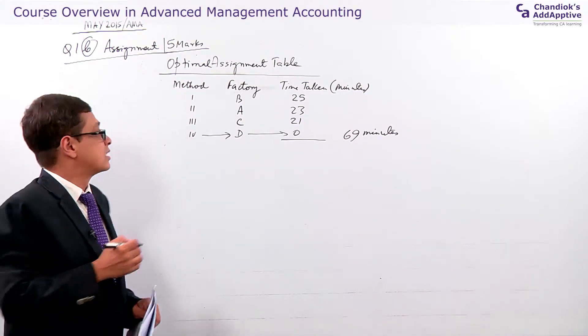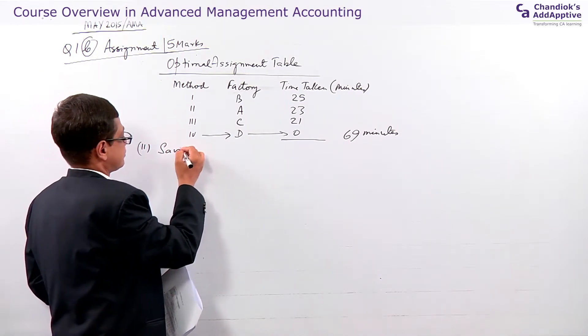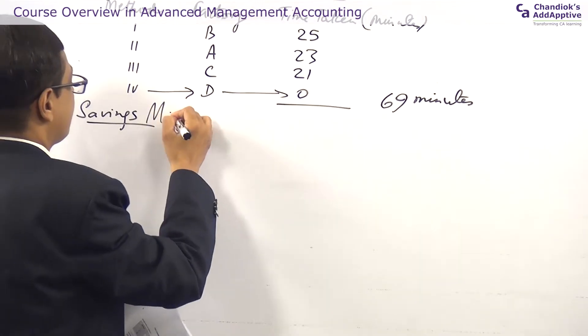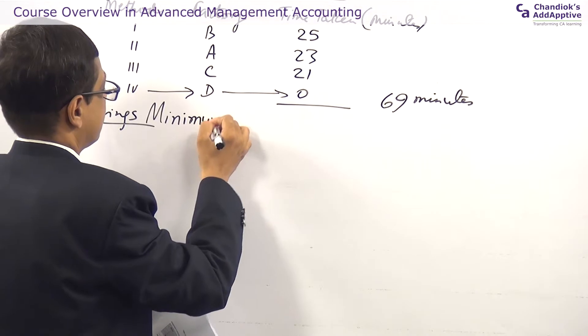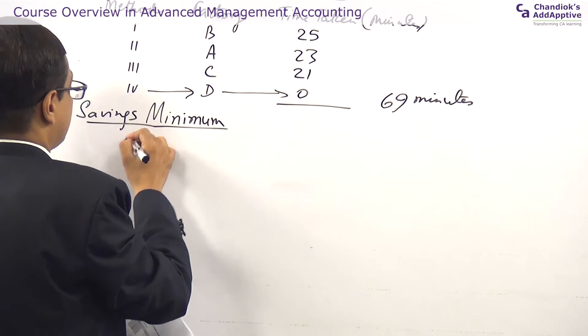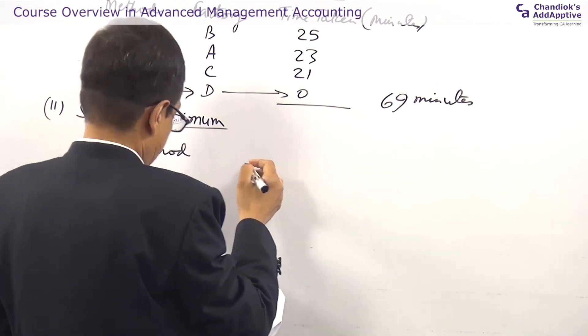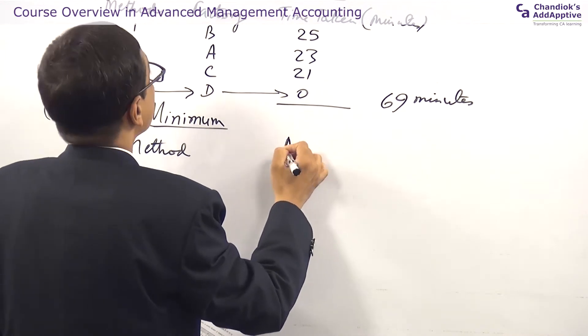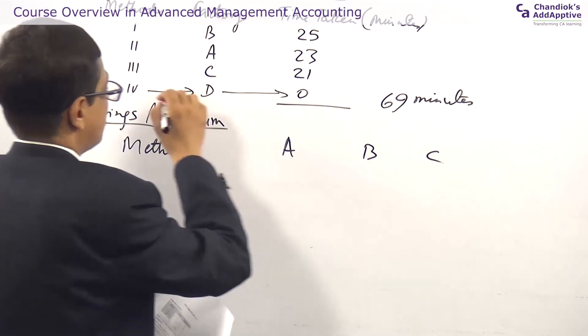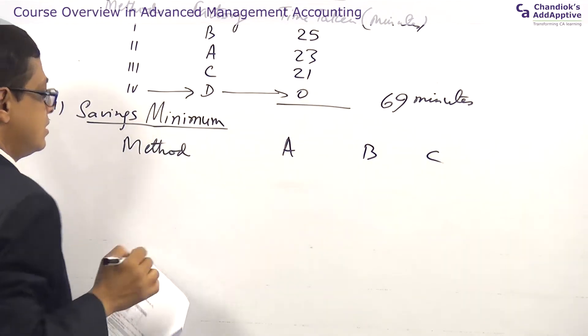You must remove it. The second part of the question talks of savings. When you talk of savings, minimum. What does it mean? Again, you have to take the four methods. A, B, C. We have not taken D because D is the method which is eliminated. It is taking 0 minutes.